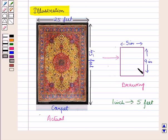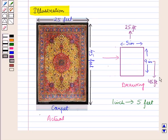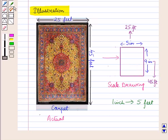It means 1 inch on the drawing represents 5 feet in the real world. So on the drawing, 5 inches represents 25 feet and 9 inches represents 45 feet. Such a drawing is called a scale drawing.